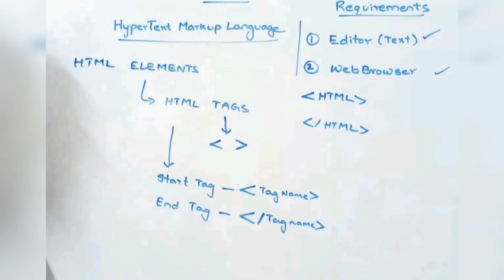In HTML, the code is written as HTML elements, and HTML elements are called HTML tags. By using these tags, we write our code. A tag is represented between a less-than symbol and a greater-than symbol.